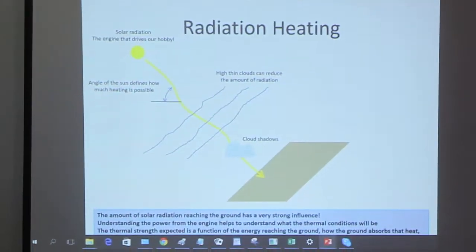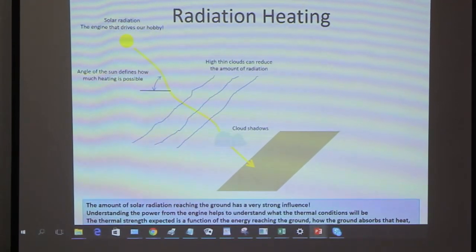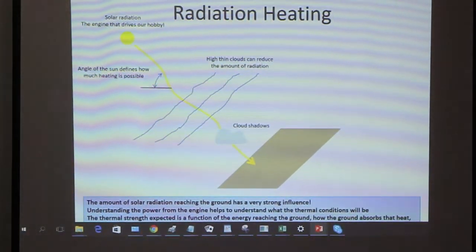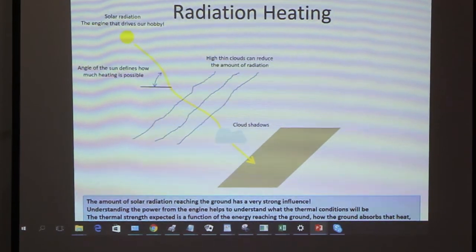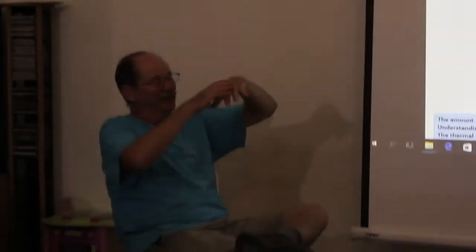So you guys have run into this a lot of times. What is important is actually how much energy is making it to the ground. Sometimes when you've got high level clouds you don't really realize how much that's filtering out the sun that's reaching the ground. You just have high level haze and it's kind of uniform, you don't realize that only half the energy is making it to the ground and thermals are kind of weak.